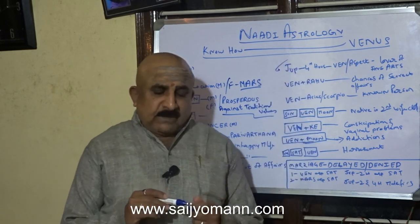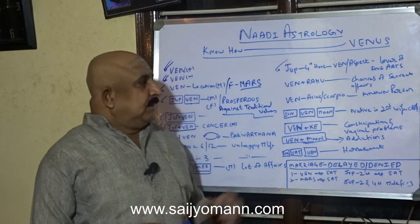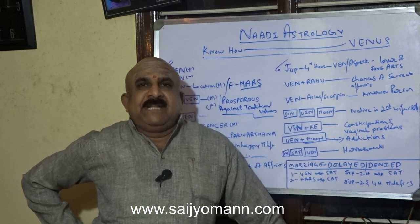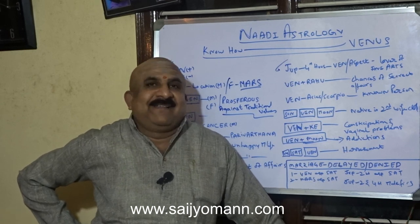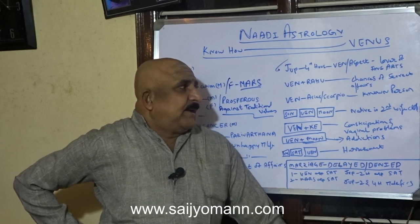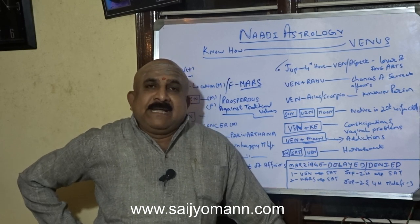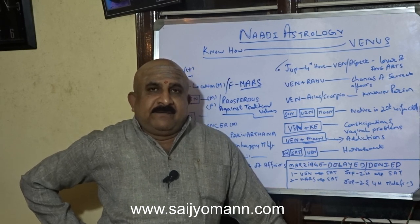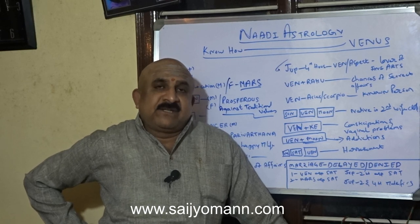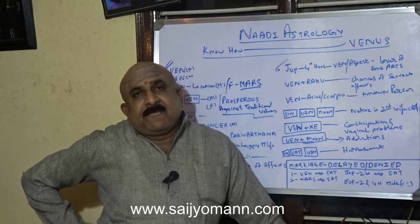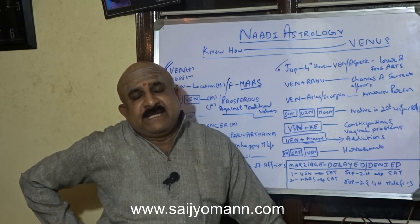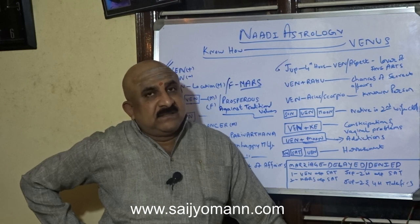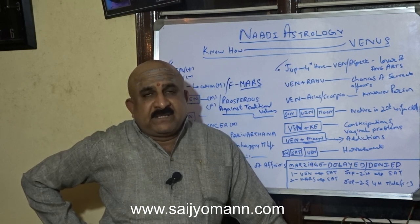One more point for the male: Venus and Rahu together in a male chart tells us about secret affairs — the chances of the native having secret affairs.